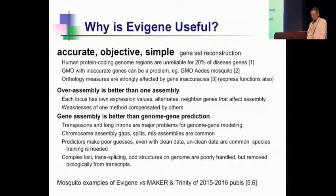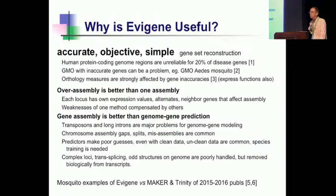Why should everybody be using Evidential Gene? The first three words are the important parts: it's simple — relatively simple in its basics. Assemble the RNA, measure it, and you're done. It's objective; it's not using a lot of assumptions, and it's not using reference genes to actually build new genes, as many genome modeling pipelines are doing. And it turns out it's also accurate. Using homology alignment to reference as your gold standard, this objective approach gives you a good idea of what's the more accurate and what's the less accurate gene.